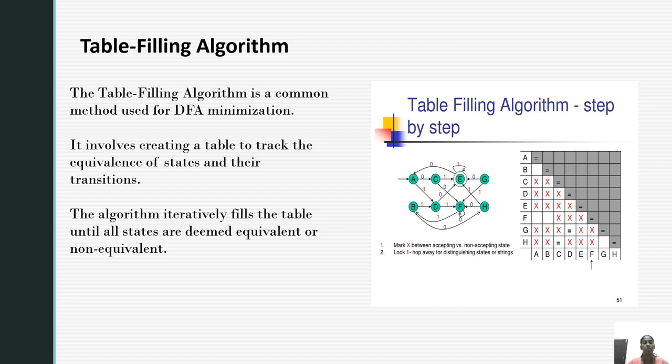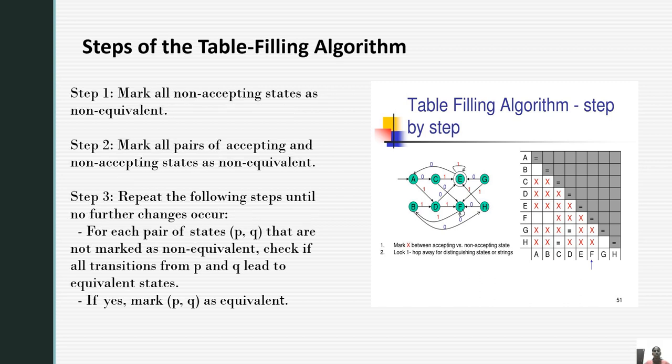Now, let us see the table filling algorithm. The table filling algorithm is a common method used to minimize the DFA. It involves creating a table to track the equivalence of states and their transitions in a given DFA. The algorithm iteratively fills the table until the states are marked as equivalent or non-equivalent. Now, let us see the steps involved in the table filling algorithm.